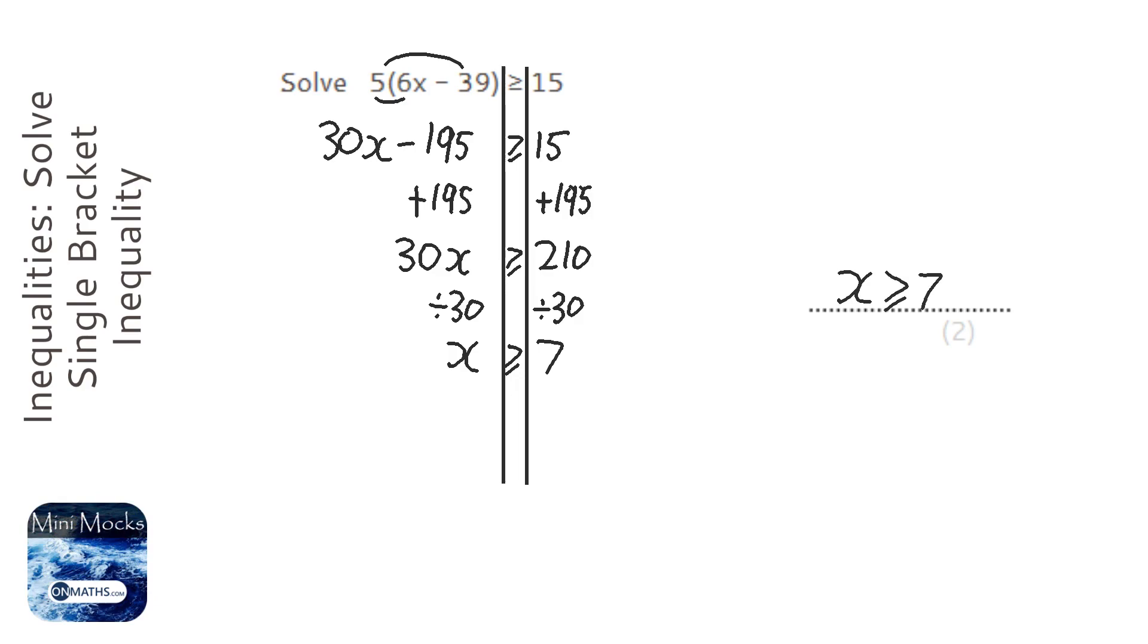Now it's really tempting to put an equal sign in there but you must remember to always put in the sign that shows you in the question. Now a quicker way of doing this could have been that you divide both sides by 5 in the first step.